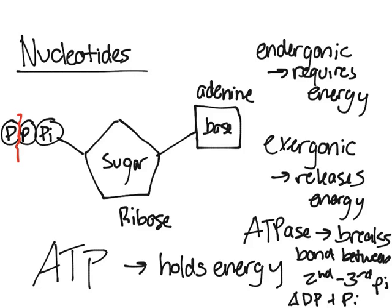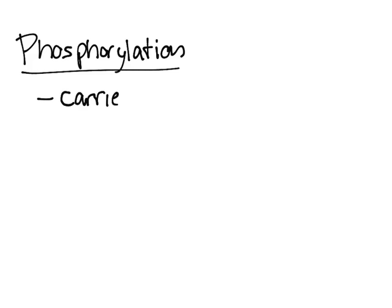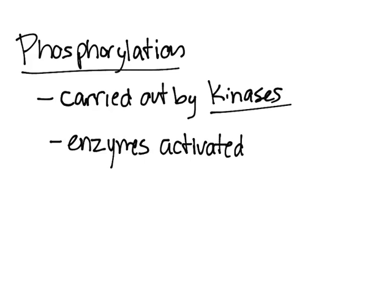The process of adding a phosphate group is called phosphorylation — that's the addition of a phosphate group to another molecule. It's carried out by molecules called kinases, which are enzymes that add phosphate groups to other things. Most of the time, they activate other enzymes.